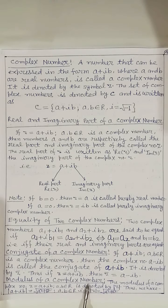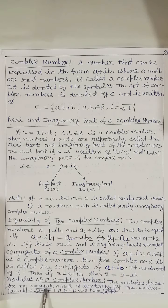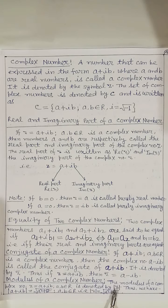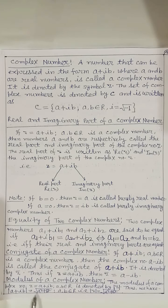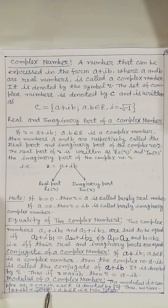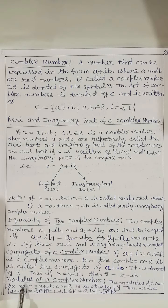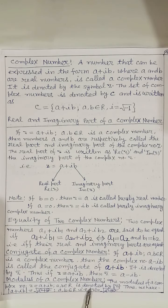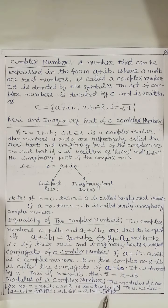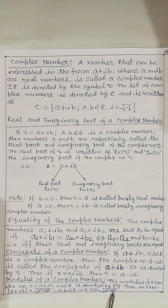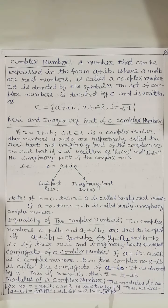Modulus of a complex number: the modulus of a complex number z = a + ib, denoted by |z|, is defined as |z| = |a + ib| = √(a² + b²). So the modulus of a complex number z equals √(a² + b²). Thank you.